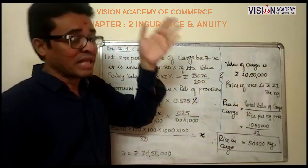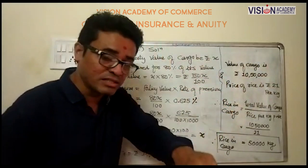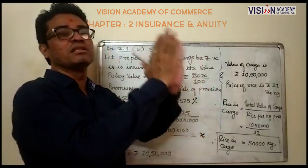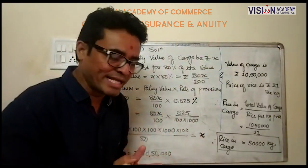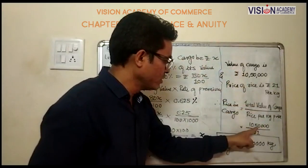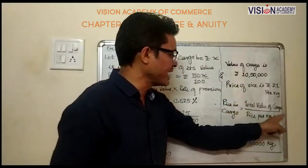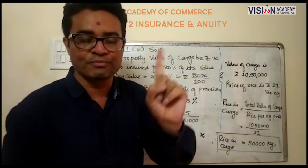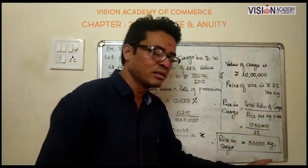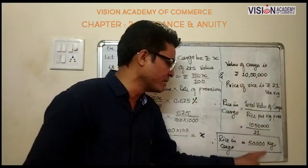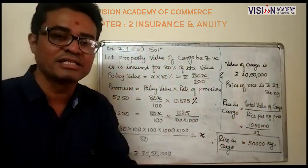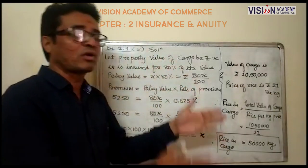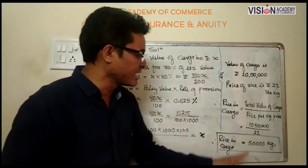The price of rice per kg is rupees 21. In this question we require how much rice is in the cargo. If we want quantity: value of cargo 10 lakhs 50 thousand divided by rice price per kg rupees 21 comes to 50,000 kg. So the required answer — rice in the cargo in quantity — is 50,000 kg.